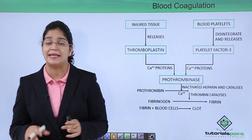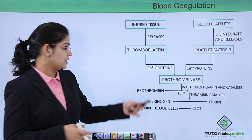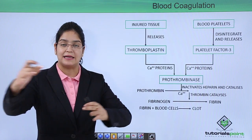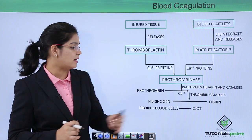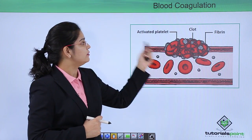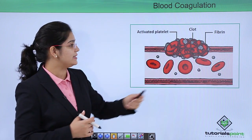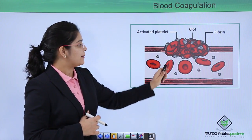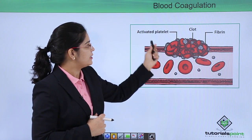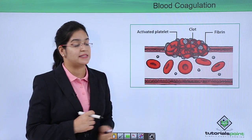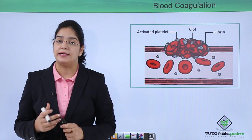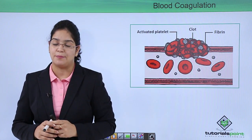Fibrin contains strong thin fibers which collect RBC and WBC to make a clot. Here you can see activated platelets and fibrin combining with WBC and RBC to form a clot. So in this video we have learned about the formation of a clot in our body.